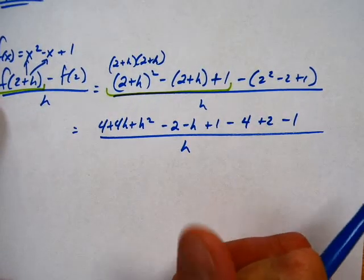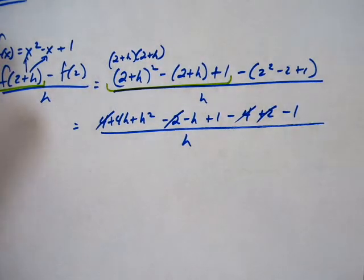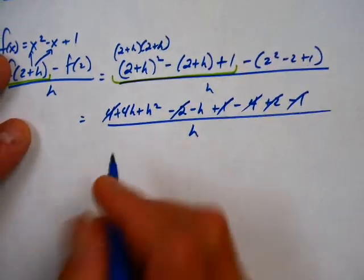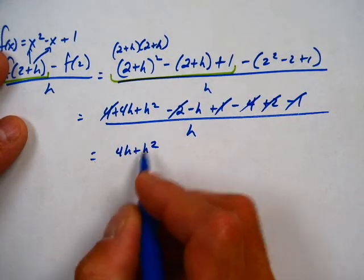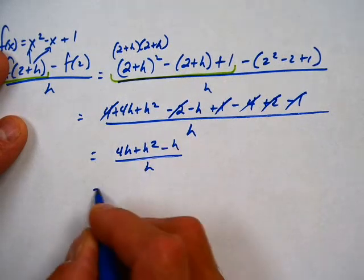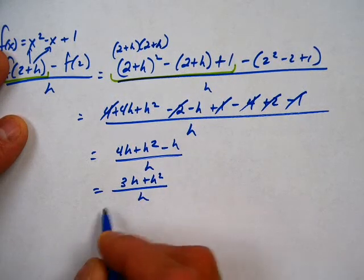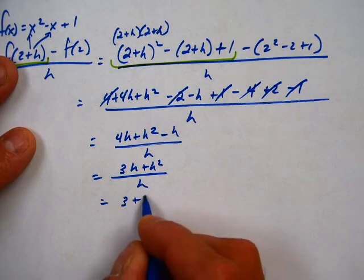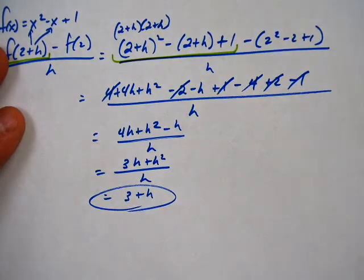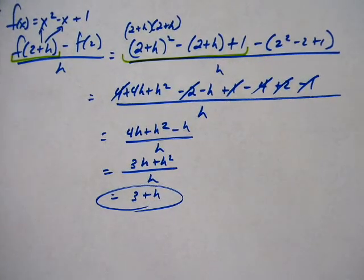So now let's work on this. F of 2 plus h. So we're going to take 2 plus h and we're going to plug it in for x. What is a difference quotient? So we've got minus, and f of 2, let me scroll out just a little bit. That would be 2 squared minus 2 plus 1, all over h. So the first challenge is just getting it started. Now let's go ahead and multiply this out. 2 plus h times 2 plus h. Now we multiply that out: 4 plus 4h plus h squared minus, if there's any point in time that you're not quite sure where I came up with something, stop me.